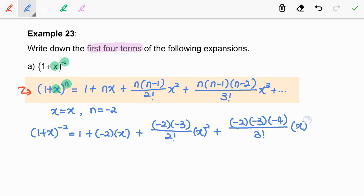Let's review it. We are going to stop here because the question mentioned to write down only the first 4 terms. Next, simplify this expression. So we got 1 minus 2x plus 3x squared minus 4x cubed plus dot dot dot as our final expansion.